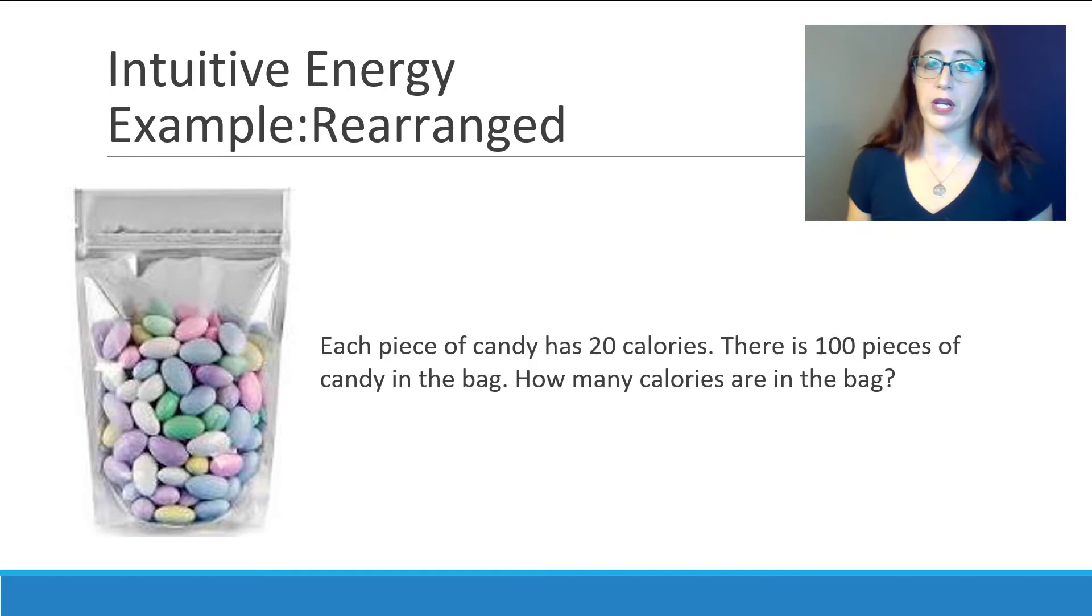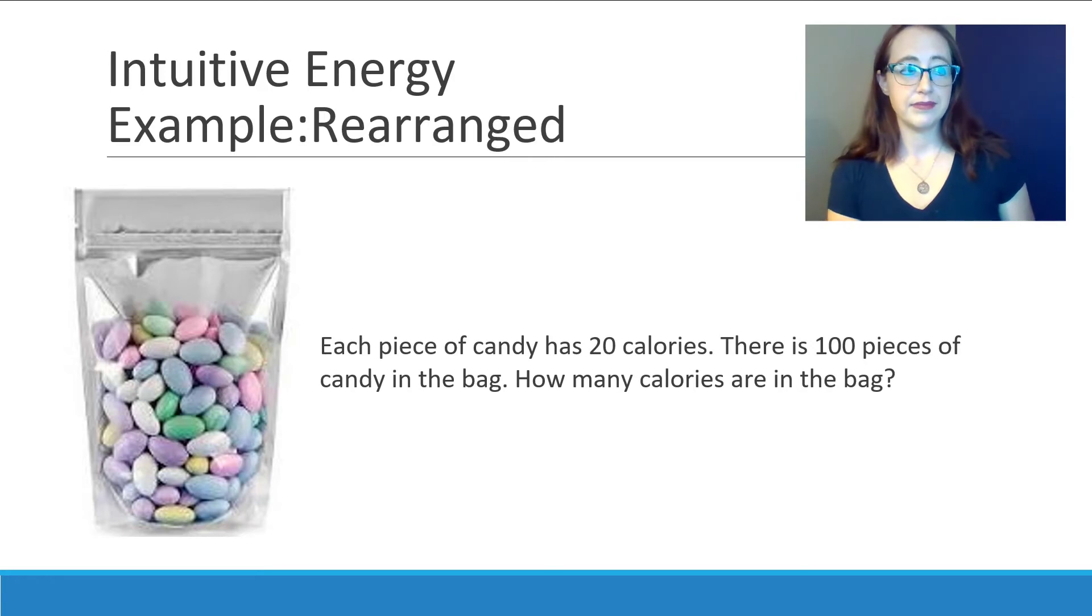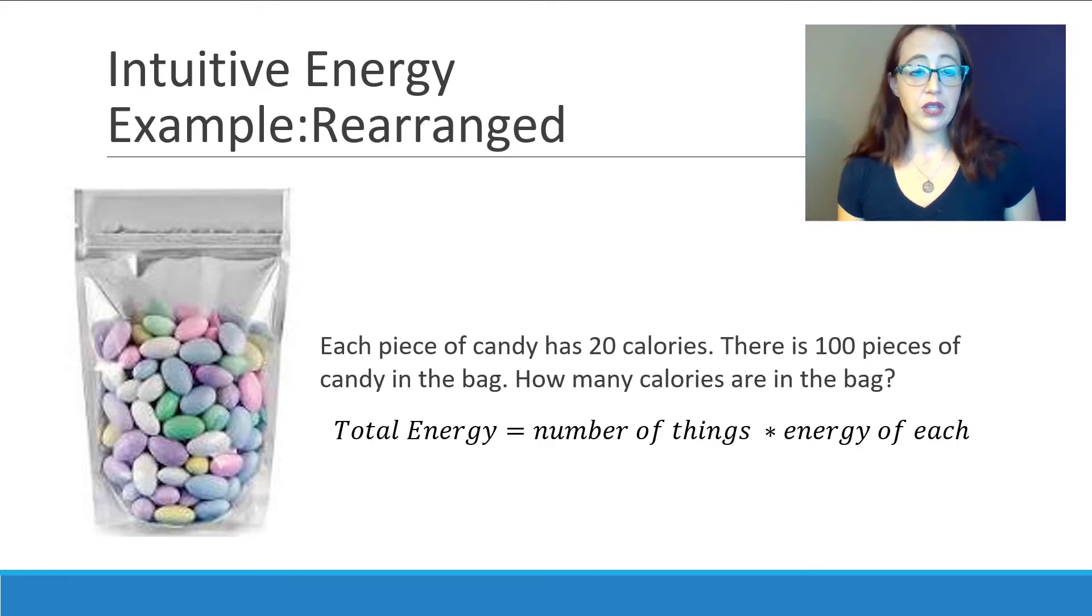Let's take a very similar version of this question, which uses multiplication instead. Look at the problem on this slide. Think about how you would solve it, and perhaps write an equation based on it. Here we have each piece of candy has 20 calories. And there's 100 pieces of candy in the bag. So in order to know how many calories are in the whole bag, we would multiply those. Or in other words, to get our total energy, our energy of our bag, then we would take our number of things, our 100 pieces, and multiply by our 20 calories.